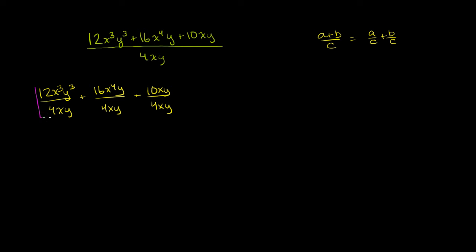So we can divide 12. 12 divided by 4 is 3. x to the third divided by x - remember, x is the same thing as x to the first power - so that's going to be x to the 3 minus 1 power.